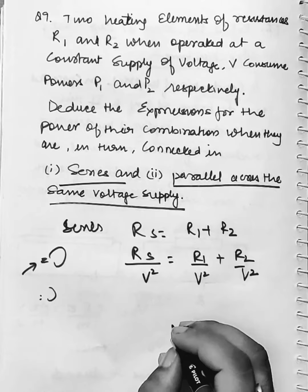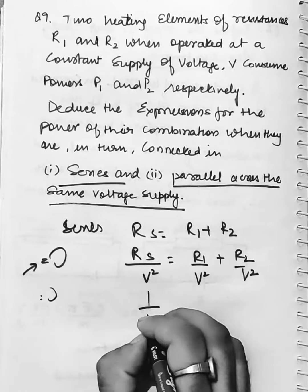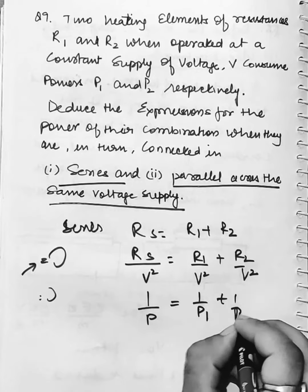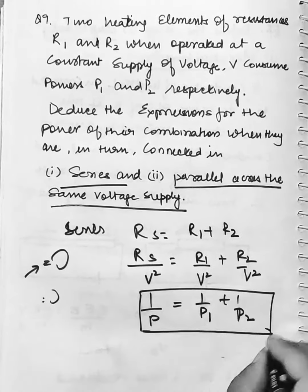We can divide. You can see that this is 1 by P1 plus 1 by P2. So in series, the power formula is this: 1 over P equals 1 over P1 plus 1 over P2.